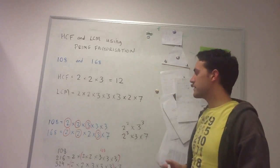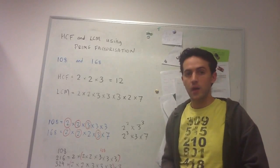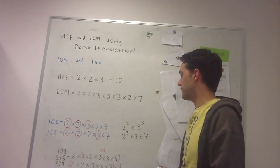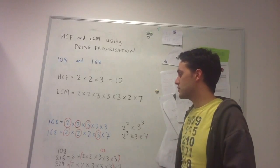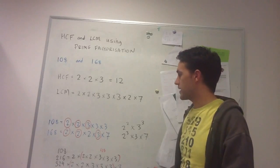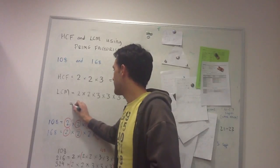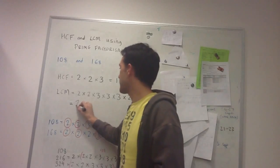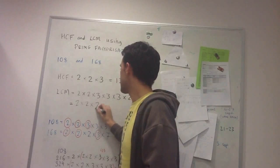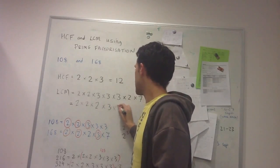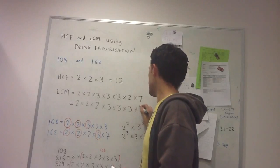And whatever this number is will be my lowest common multiple of 108 and 168. So if I rearrange it just so that I've got everything in order, it's going to be 2 times 2 times 2 times 3 times 3 times 3 times 7.